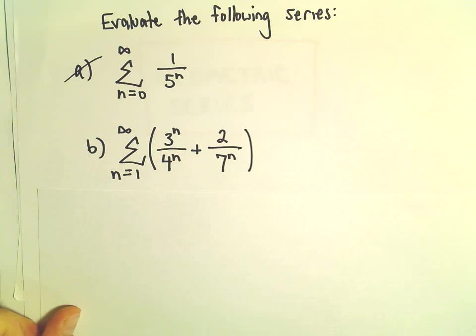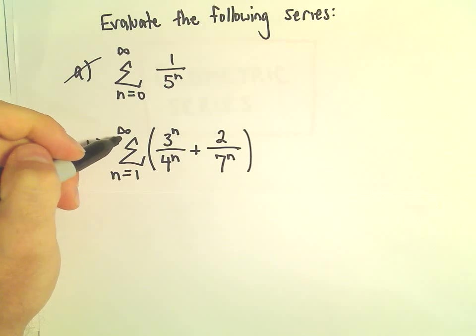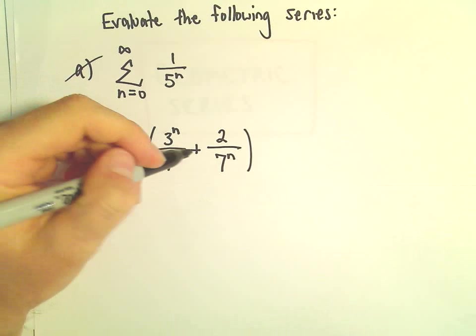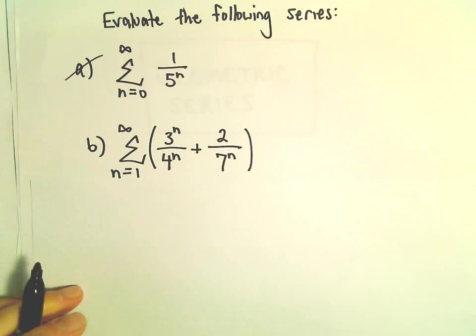So part b here, we've got the sum of n equals 1 to infinity of 3 to the n over 4 to the n plus 2 over 7 to the n.